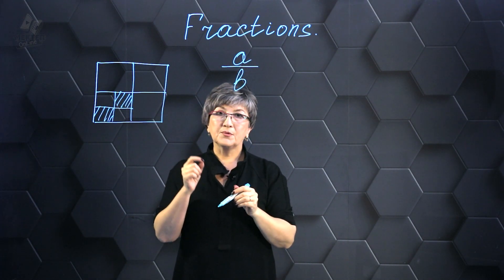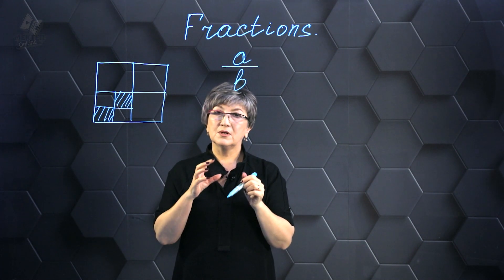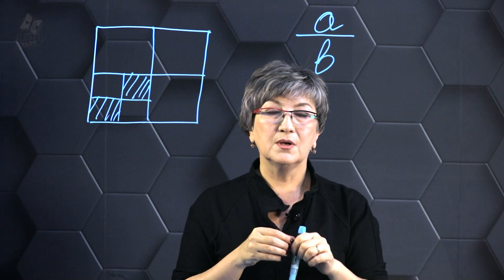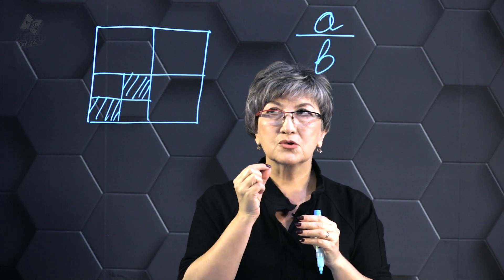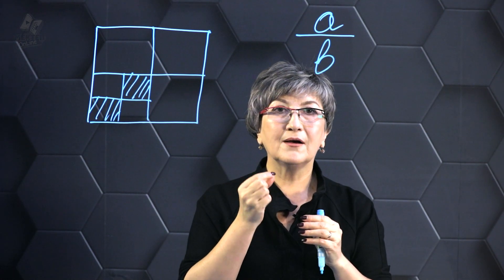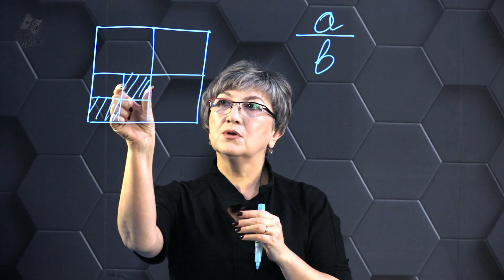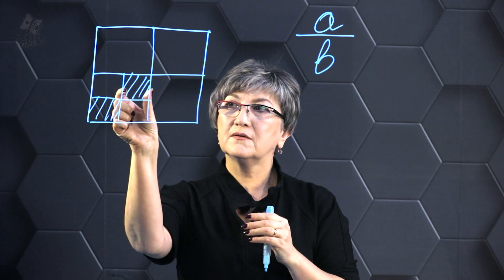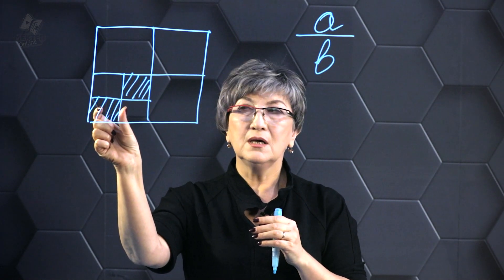Let's attempt to write down this fraction. First, let's discuss this — it is very important: to write a fraction, you need to understand how many equal parts there are in the whole. The matter is that we have this square, and part of it is shaded in color.